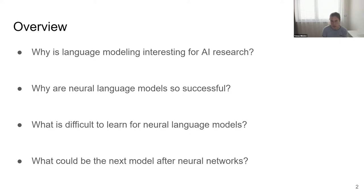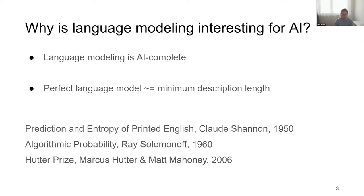We may need to develop new mechanisms to train these models or think of different architectures. It's not clear what the future will bring, but I'm convinced we still need to do research here and that more data alone is not going to solve everything. I'll also speculate about what can come after neural networks — about complex systems and models where complexity emerges spontaneously.